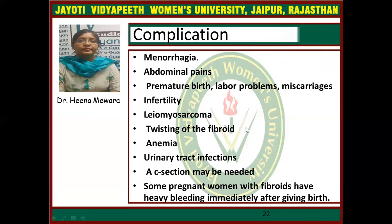Complications of fibroid include menorrhagia and abdominal pain, chances of premature birth, labor problems, miscarriage, infertility, malignant transformation into leiomyosarcoma, torsion of the fibroid, anemia, urinary tract infection, need for C-section, and heavy bleeding immediately after delivery in pregnant women.